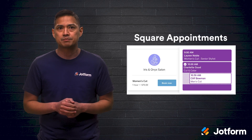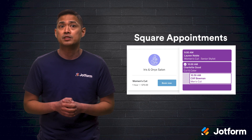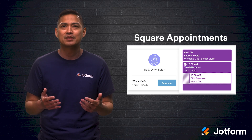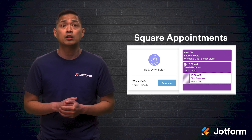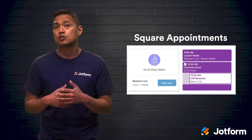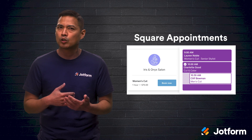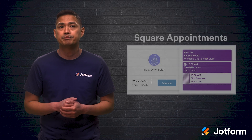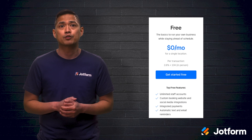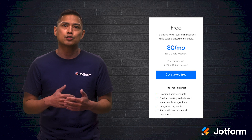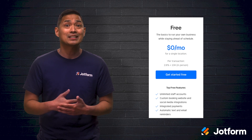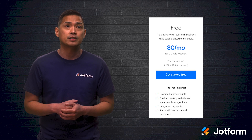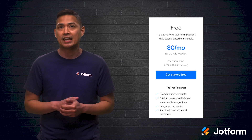Now let's talk about Square Appointments. This flexible scheduling software lets your customers book appointments via a free booking website or through booking links on Google and Instagram. Similar to Acuity Scheduling, Square Appointments also sends automated reminders about upcoming appointments to clients. You can also collect payments at checkout — require prepayment at the time of booking, send invoices, or charge a no-show or cancellation fee. The individual user plan is free, but there is a charge of 2.6% plus $0.10 per tap, dip, or swipe. For multiple employees, plans start at $50 per month with an added 2.5% plus $0.10 per tap, dip, or swipe.